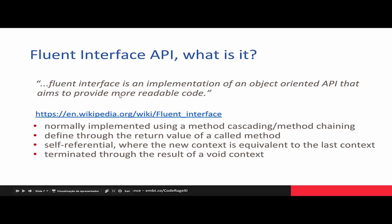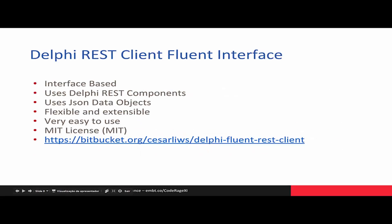So what about the Fluent Interface API? According to Wikipedia, a Fluent Interface is an implementation of an object-oriented API that aims to provide more readable code, normally implemented using method cascading or method chaining. It is defined through the return value of a called method, and is self-referential where the new context is equivalent to the last context, terminated through the result of a void context. With all this together, I introduce you to the Delphi REST Client Fluent Interface.